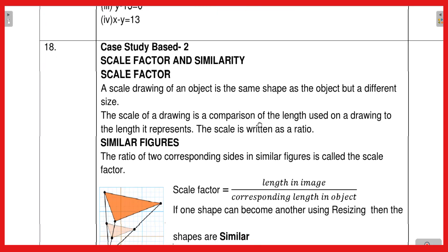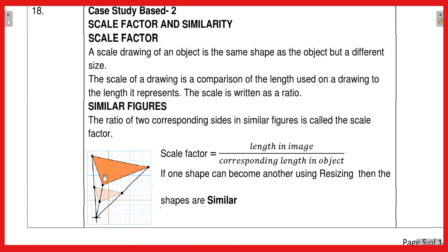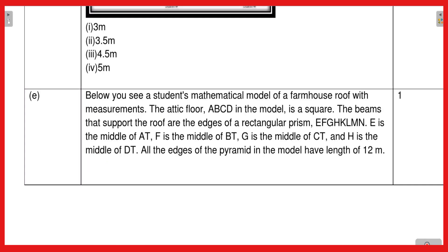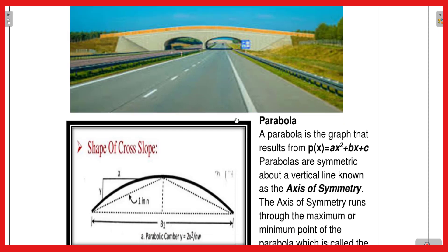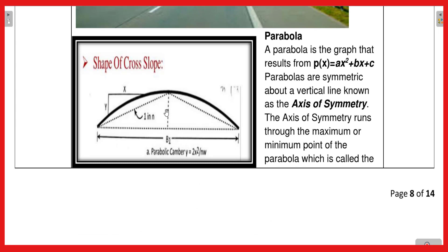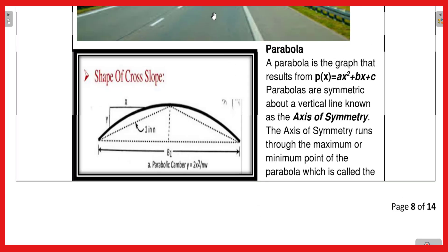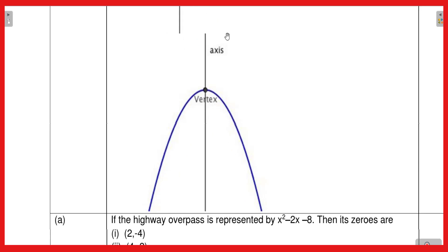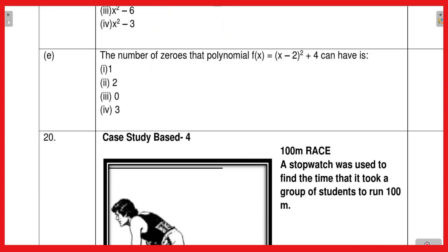Here is another case study on scale factor and similarity. A figure is given and you have to use the rules studied in the triangle section of your syllabus to solve these questions. We will see how to deal with these in detail later. Another case study shows figures given in the normal way as in textbooks, asking one-mark questions on the figure — five questions, out of which you solve four.